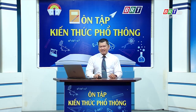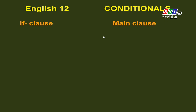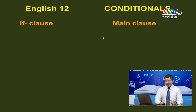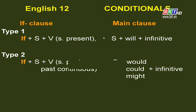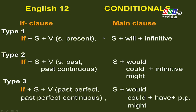Now I have a summary. You can see the if-clause on the left and the main clause on the right, with Types 1, 2, and 3 listed in order. This summary table is very important. You need to read it carefully and memorize it. It will be very useful when you use conditional sentences and do exercises later.